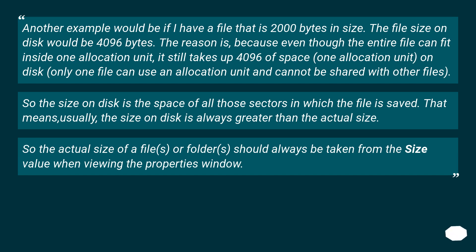So the size on disk is the space of all those sectors in which the file is saved. That means, usually, the size on disk is always greater than the actual size. Therefore, the actual size of files or folders should always be taken from the size value when viewing the properties window.